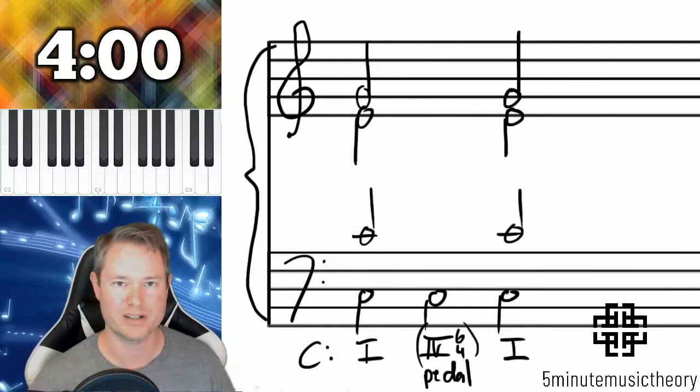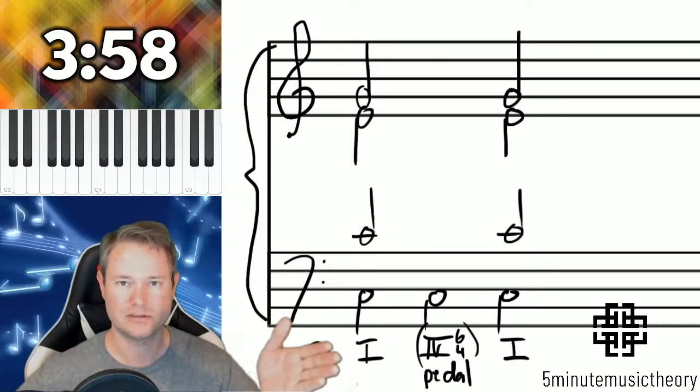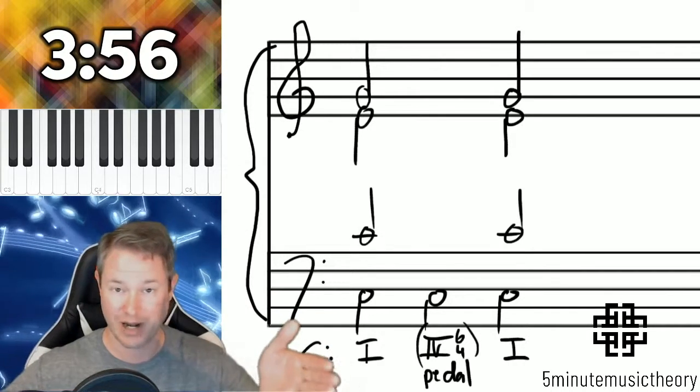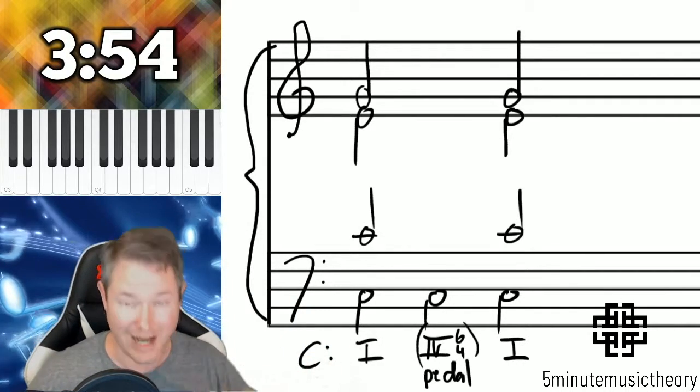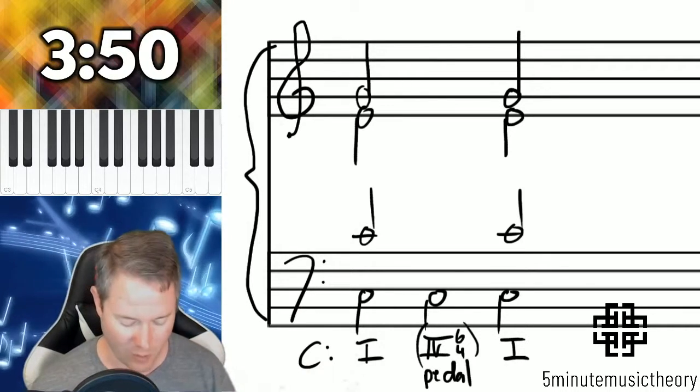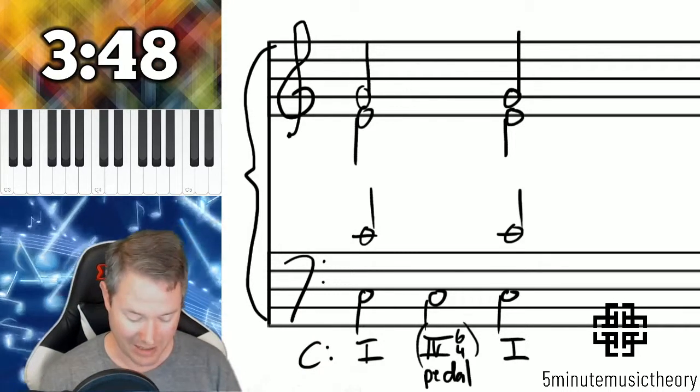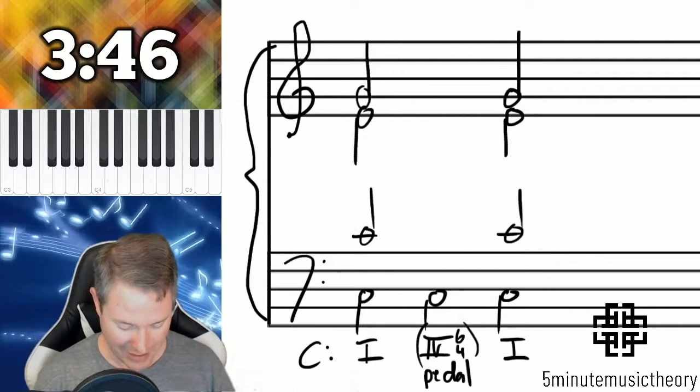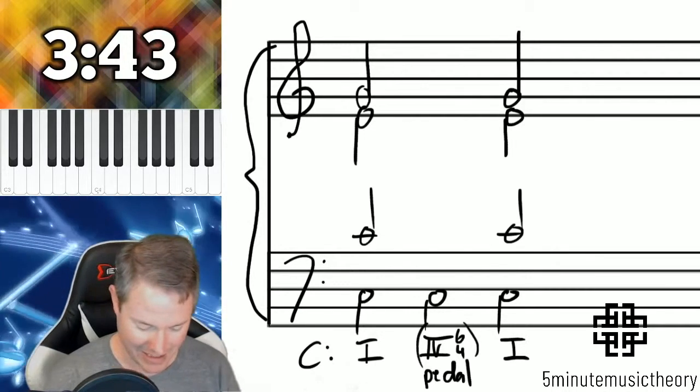Typically in pedal 6-4s, the outer chords, the ones that surround the 6-4, are the same chord and have the same voicing. And then the one in the middle is a subdominant 6-4, which is an F major, and it's going to be an F major in second inversion. That's F-A-C.